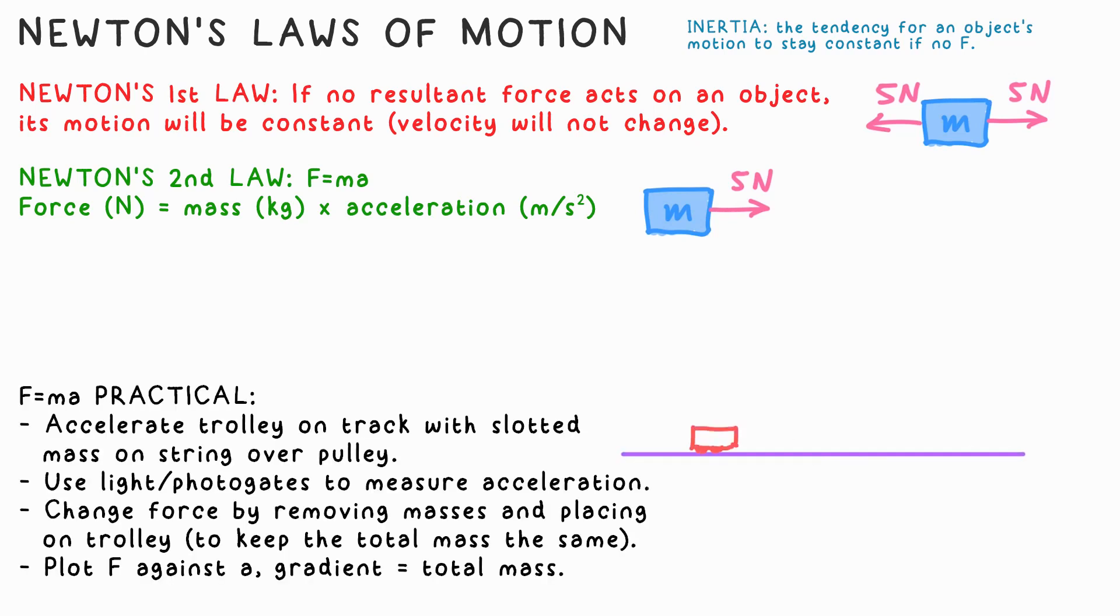We can prove Newton's second law by doing a practical. We use a trolley on a track being pulled by the weight of masses hanging over a pulley in the end. We can use light gates, photo gates, to measure the acceleration between two points, then change the weight on the string. Just remember that whatever mass you take off the hanger must go on the trolley itself, as the force is accelerating both the trolley and the masses themselves.